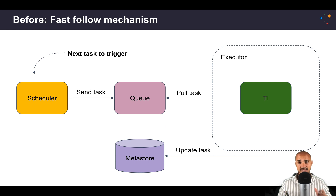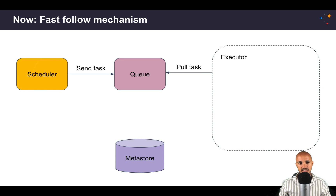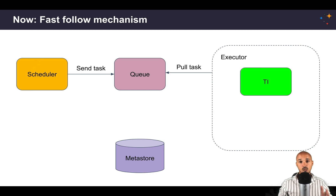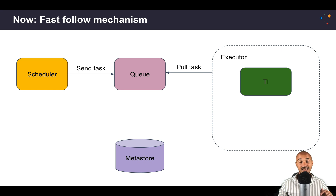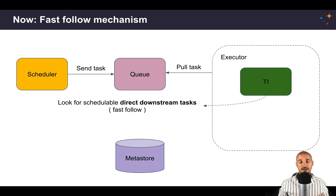Now let's discover how your tasks are executed with the fast follow mechanism implemented in Airflow 2.0. Imagine that your task has already been scheduled, pushed into the queue, and pulled by the executor in order to execute it — so the current task has the status 'running'. As soon as the task is completed, instead of checking the next task from the scheduler, the executor itself is in charge of checking if there is any direct downstream task to execute. This is the fast follow mechanism.